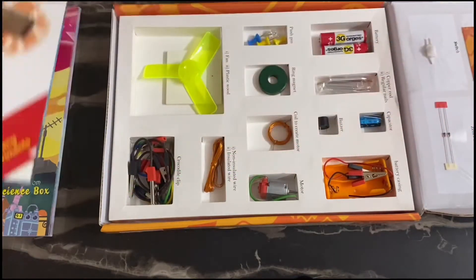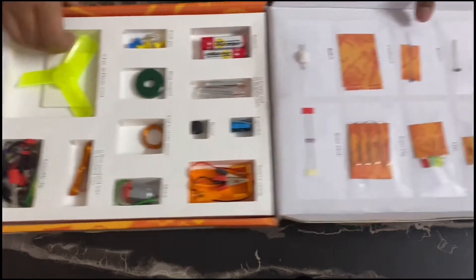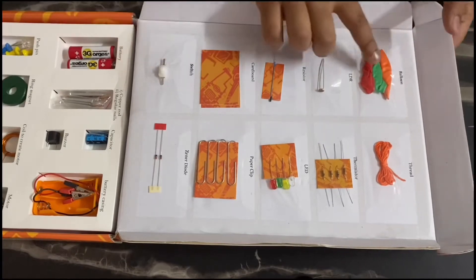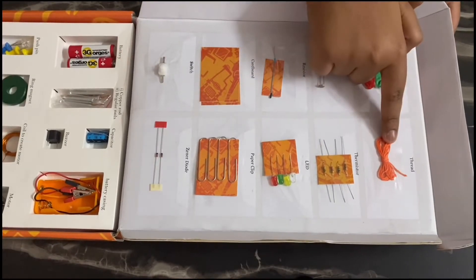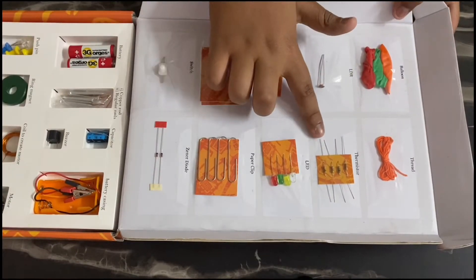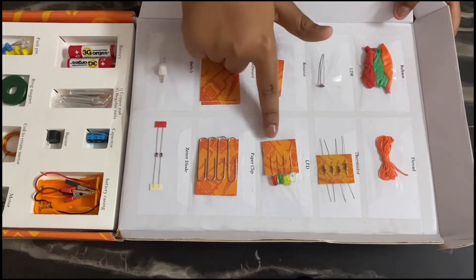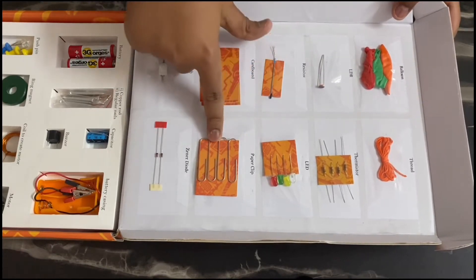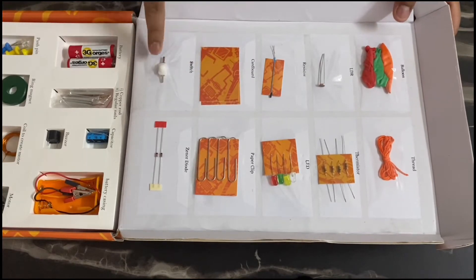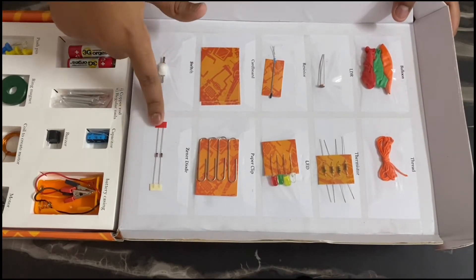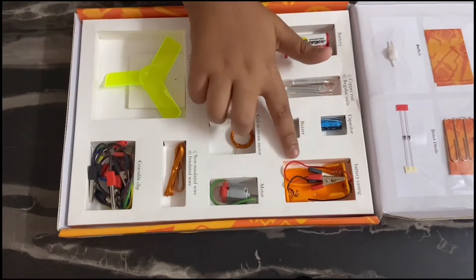Let's see what's in the box. In the upper side of the box, you will get three balloons, a thread, thumb star, LDR resistor, LED, paper clip, cardboard switch, and zener diode.